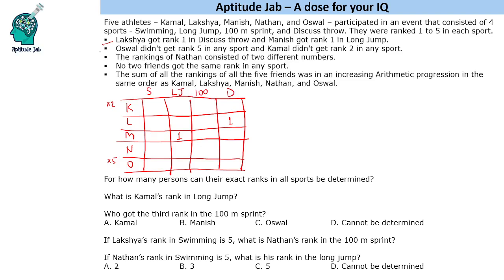The rankings of Nathan consisted of only 2 different numbers — so just 2 different numbers will be used across his 4 sports. Also, no 2 friends got the same rank in any sport, meaning ranks 1 to 5 are all used in each sport. The sum of all rankings of the 5 friends forms an increasing arithmetic progression in the order: Kamal, Laksh, Manish, Nathan, and Oswald.